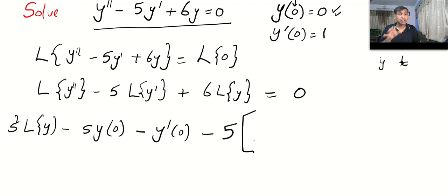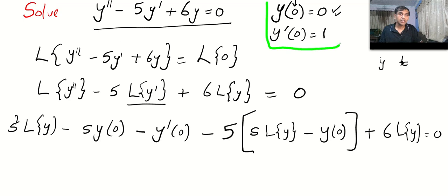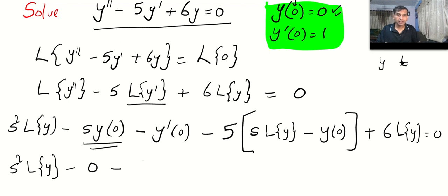Laplace of y' is s L{y} - y(0). This bracket is very important. Plus 6 L{y} = 0. Now plug in the initial conditions: s² L{y} - 0 - 1 - 5[s L{y} - 0] + 6 L{y} = 0. So s² L{y} - 1 - 5s L{y} + 6 L{y} = 0.